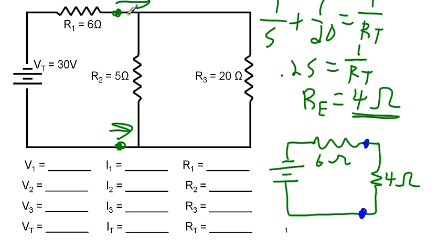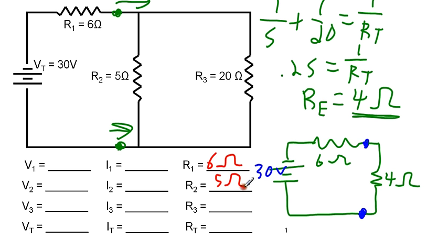This set of terminals is equal to this set of terminals. If we were to measure just the resistance to the right of this segment, we would measure 4 ohms. Now we have a simplified circuit and we can see pretty quickly that this is a series circuit. Our total voltage is 30 volts. So now we can start filling in our table. We have 6 ohms for R1, 5 ohms for R2, and 20 ohms for R3. To find the total resistance in our simplified series circuit, we have 6 plus 4, which gives us a total resistance of 10 ohms.